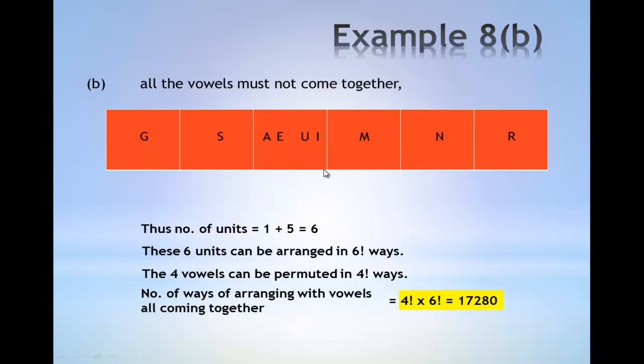The number of ways of arranging the vowels all coming together is equal to four factorial multiplied by six factorial, which gives 17,280.